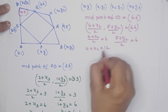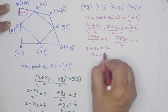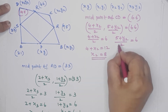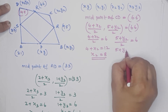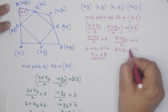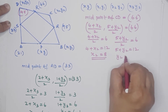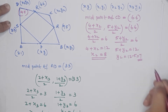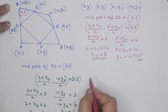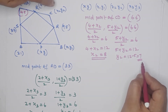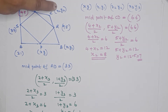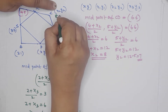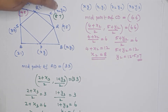From 4 plus x2 over 2 equals 6, we get x2 equals 12 minus 4, so x2 equals 8. From 5 plus y2 over 2 equals 6, we get y2 equals 12 minus 5, so y2 equals 7. Therefore, the point C is at (8, 7).